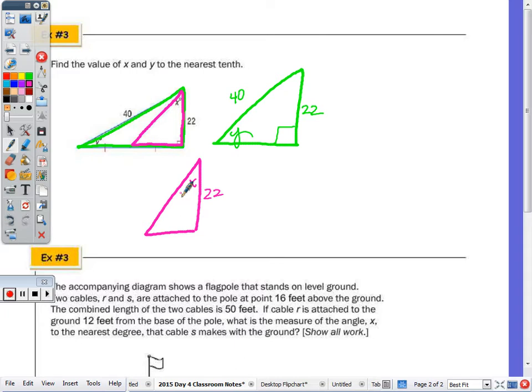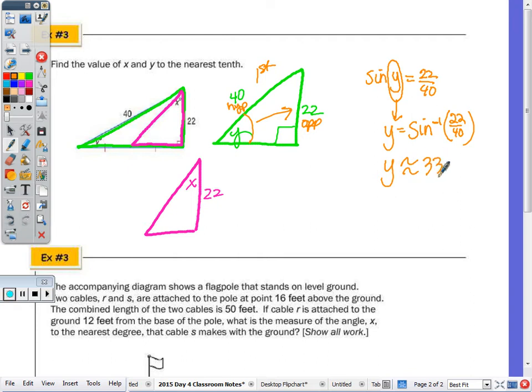To find y. So I'm going to use trig here first. Given the angle, we have the side opposite. We have the hypotenuse. So we're going to use the trig ratio sine. So sine of y equals 22 over 40. So whenever you're trying to find the angle, we do the inverse. So we use the calculator and say the ratio is 22 over 40. Tell me what the angle measure is. So inverse sine of 22 over 40 is 33. We're going to round to the nearest tenth. So y is approximately 33.4.